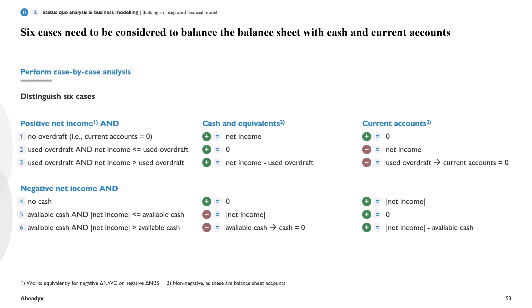Then we have the second case, which gets a bit more complex. We have positive net income and used overdraft where net income is less than or equal to the used overdraft — meaning we cannot pay back the entire overdraft because there's not enough net income. So cash and equivalents go up by zero, while we reduce the counter-accounts by the entire net income, and we will still have something remaining in the current accounts.